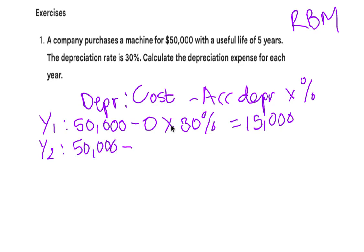For year two, we have fifty thousand minus fifteen thousand, because now it's the depreciation for the previous year, times thirty percent. So fifty thousand minus fifteen thousand gives us thirty-five thousand. Thirty-five thousand multiplied by thirty percent gives us the depreciation for year two, which is ten thousand five hundred.